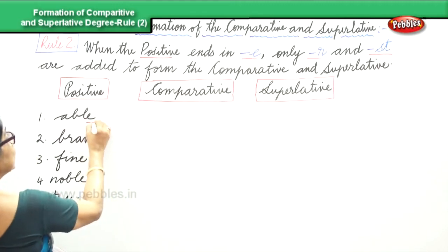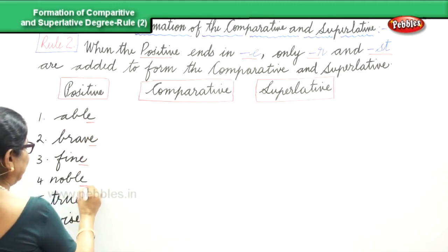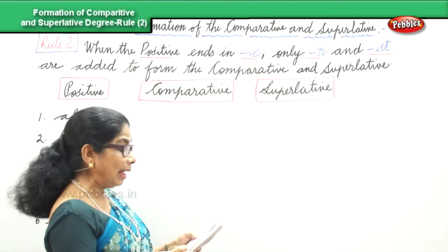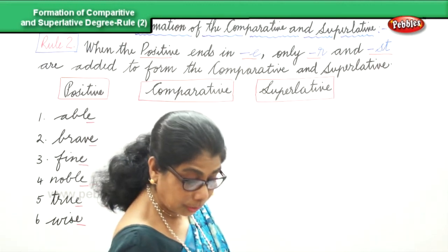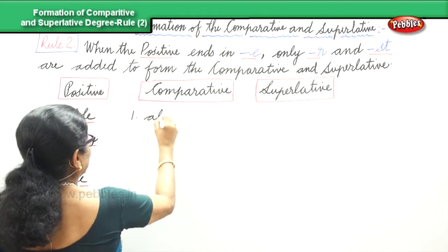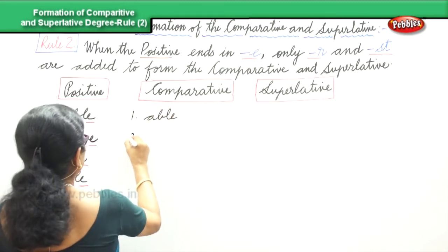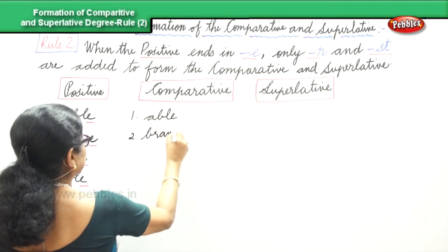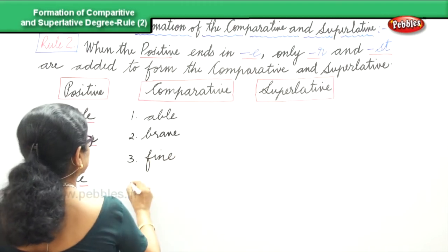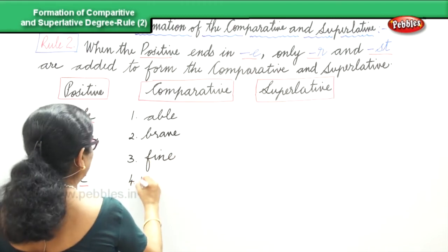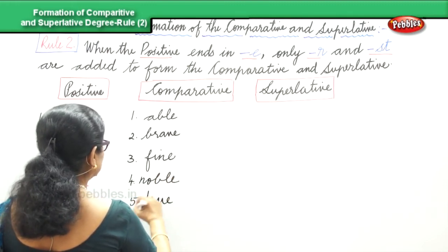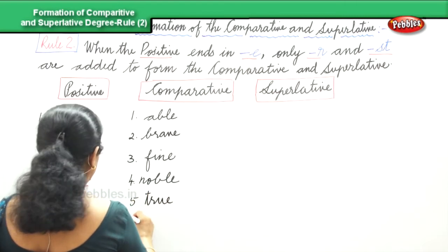When the positive ends in E, what do we need to do? To form the comparative, we add R. So: ABLE, BRAVE, FINE, NOBLE, TRUE, and WISE.